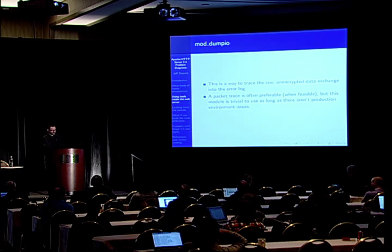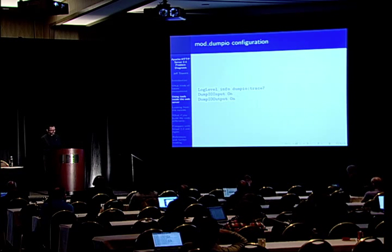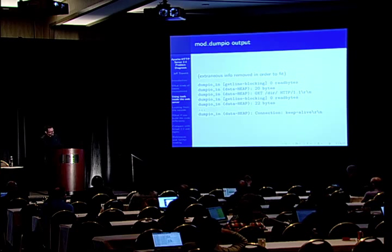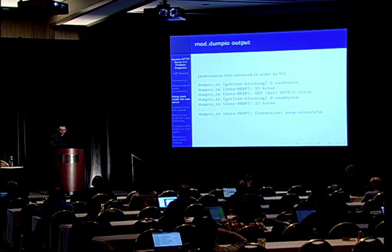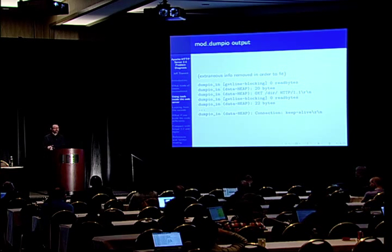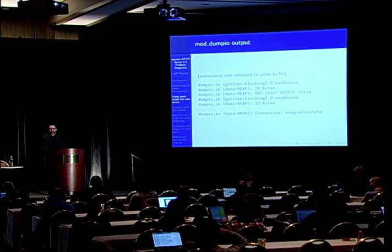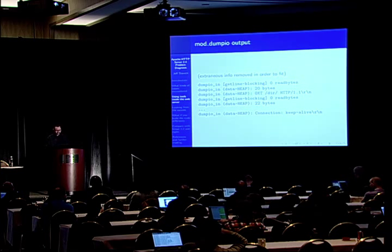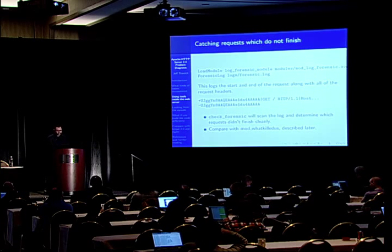Mod-dump-io has been around for a while and has a very simple configuration. In 2.4 you'd say you want dump-io to trace at level trace 7, without having to turn up the noise for everything else. You can see the data sent and received — the connection keep-alive, the request line, the GET slash directory. It's also useful for studying internal flows within HTTPD — you can tell a bit more about processing, such as what kind of memory structure something was stored in. But it's often used to get the line flow above the SSL layer without using a packet trace, because packet tracing with SSL requires certificates to decrypt.